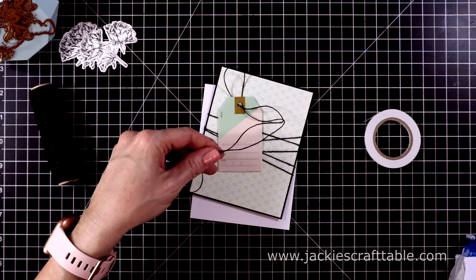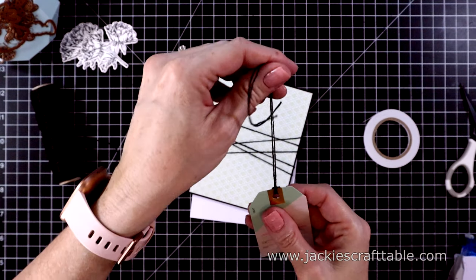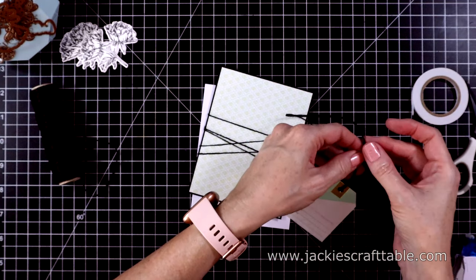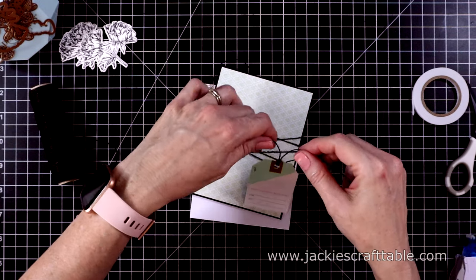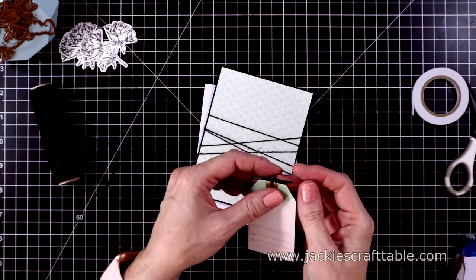So I pulled a tag out of the die cut shapes. I'm going to tie a bow at the top of this tag. This is a very simple card. But yeah, I think this one is my favorite of the set that I create today.